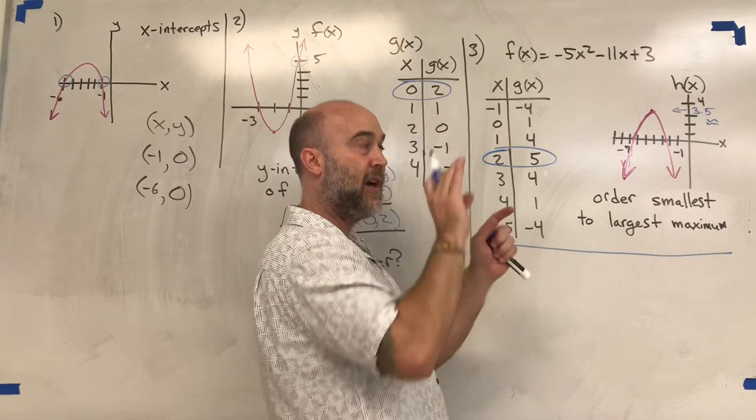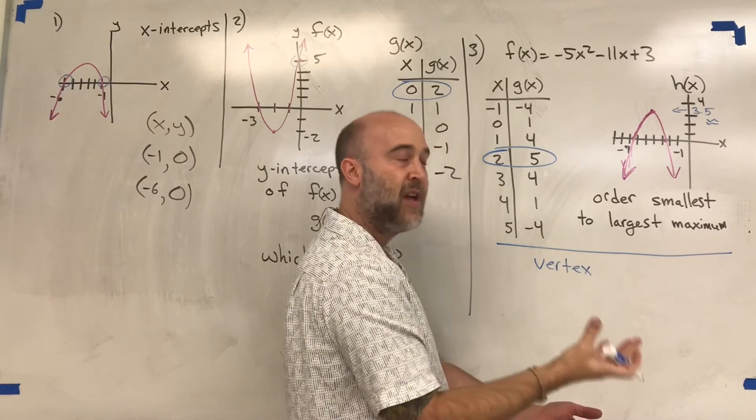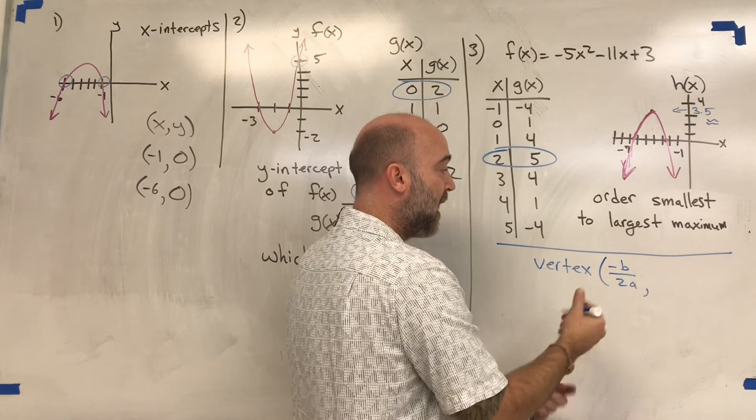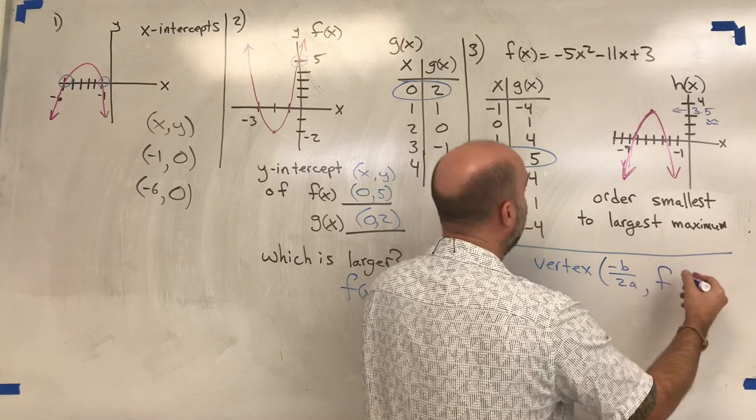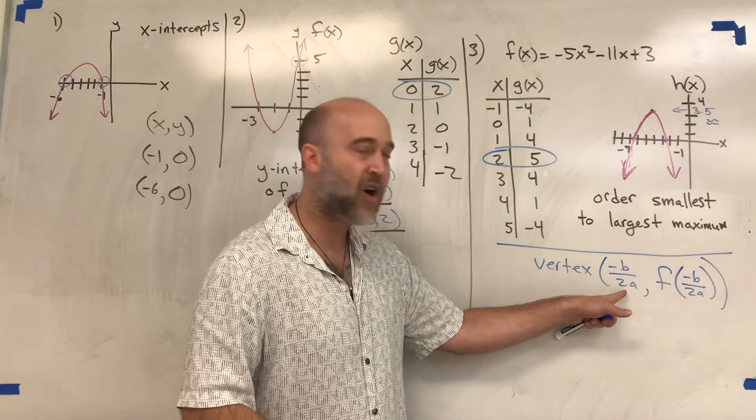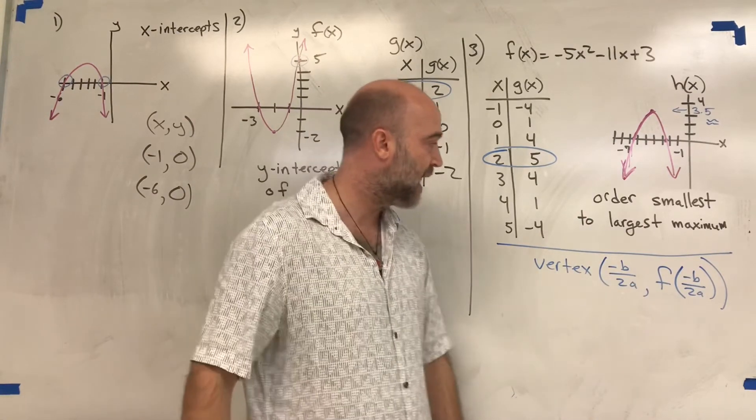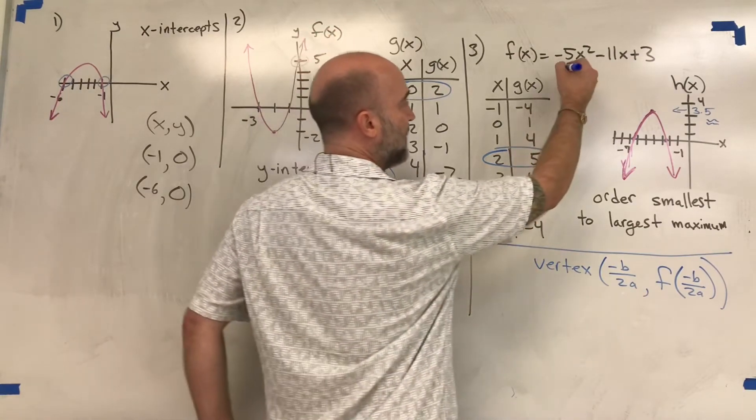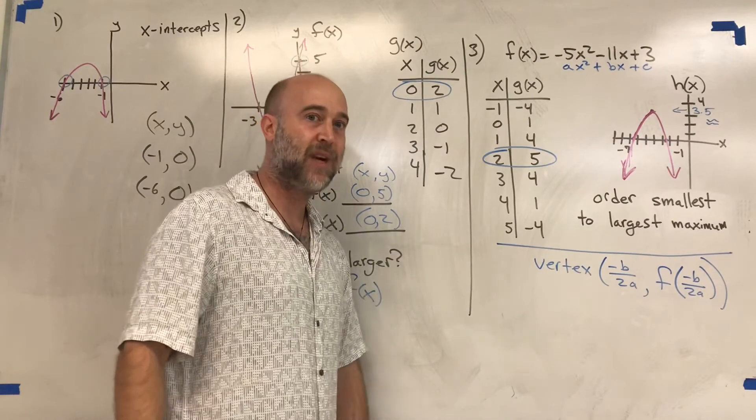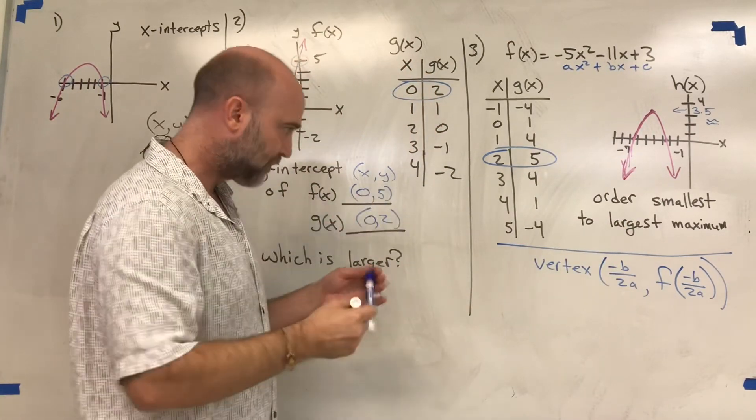The formula for the vertex—vertex for parabolas means either the bottom or top—is x = -b/(2a) for the x-component, and the y-component is I take this and plug it back into the function. Sometimes they call this the axis of symmetry because it cuts straight through the parabola. So this is ax² + bx + c. Now you can clearly see what a is and what b is—those are the ones we need.